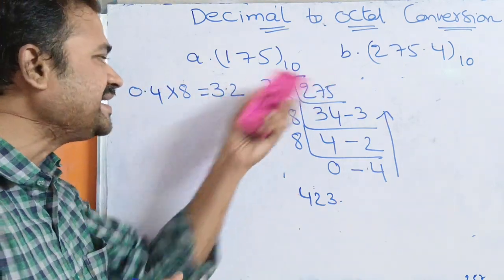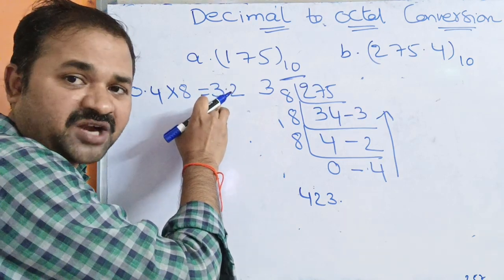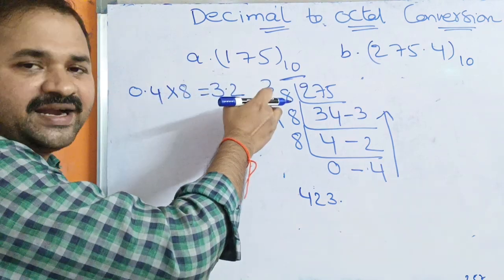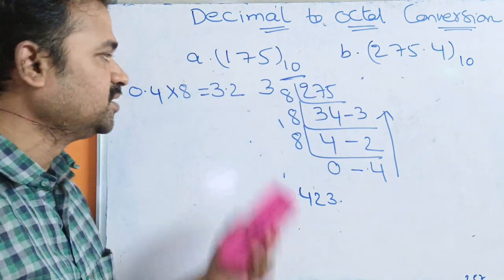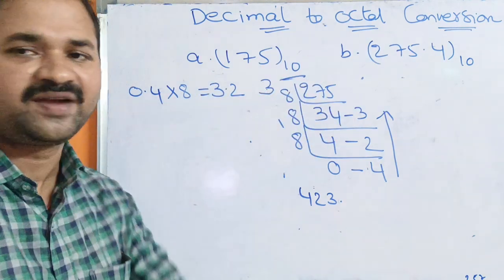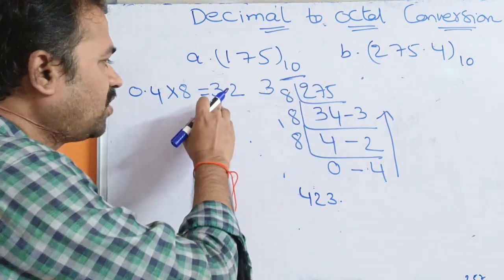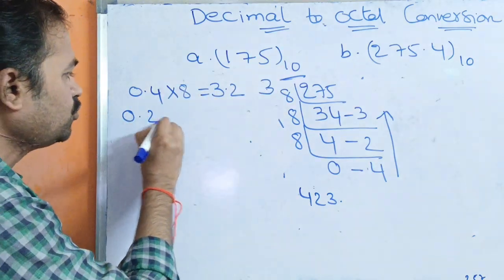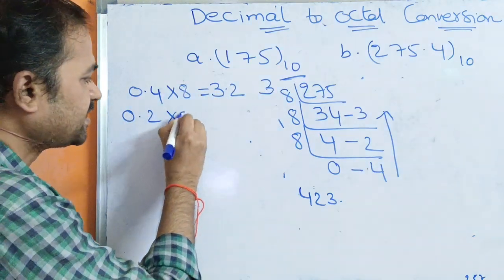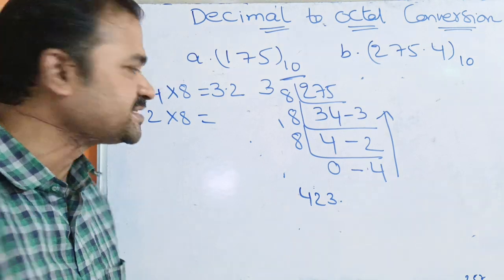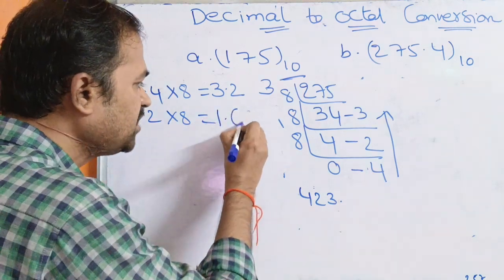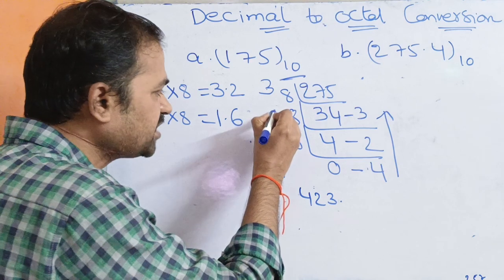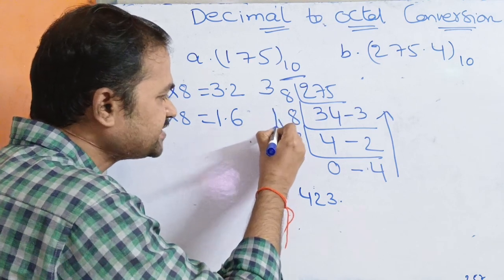After writing 3, the integer part is removed and the number becomes 0.2. So 0.2 multiplied by 8 equals 1.6. In 1.6, the integer part is 1, so we write down 1. Now the number becomes 0.6.